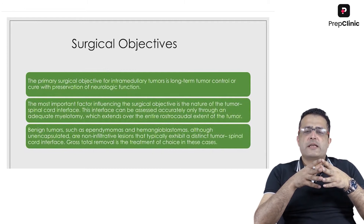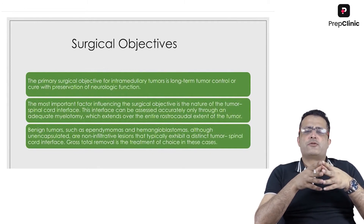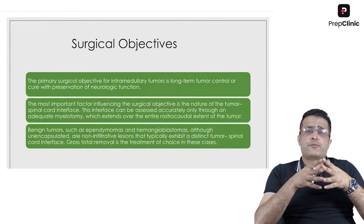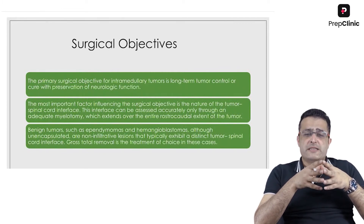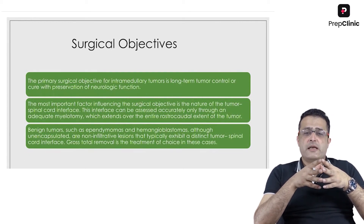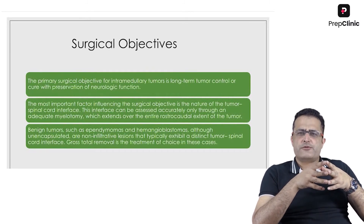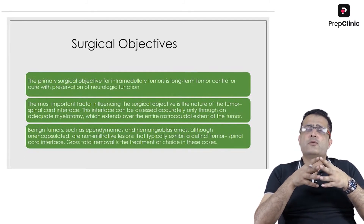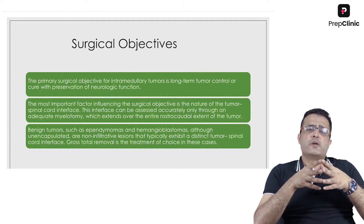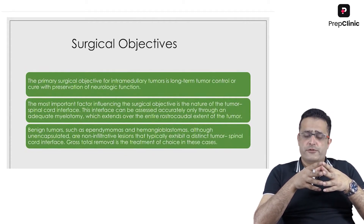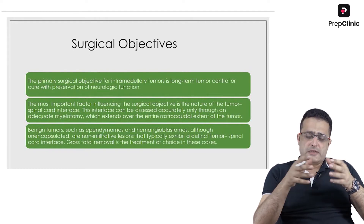Benign tumors like ependymomas or hemangioblastomas, although not encapsulated, are non-infiltrative and will typically exhibit a distinct tumor–spinal cord interface. Gross total removal may be the treatment of choice in these tumors. It is very critical to establish this interface in cases of intramedullary tumors to decide how much surgical resection can be safely performed.